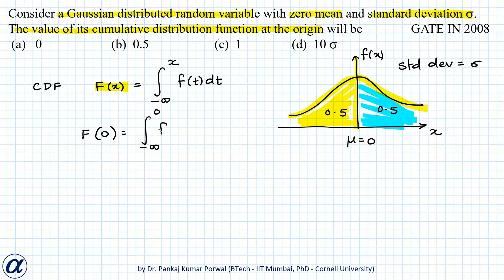This is nothing but the area under f(t) from minus infinity to 0. We know that this area is 0.5, so the cumulative distribution function at the origin has value 0.5. Therefore, option b is correct.